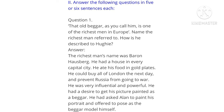Question number 1: 'That old beggar, as you call him, is one of the richest men in Europe.' Name the richest man referred to and how is he described to Huey? Answer: The richest man's name was Baron Hussberg. He had a house in every capital city. He ate his food on gold plates. He could buy all of London the next day and prevent Russia from going to war. He was very influential and powerful. He had a desire to get his picture painted as a beggar and asked Alan to paint his portrait, offering to pose as the beggar model himself.